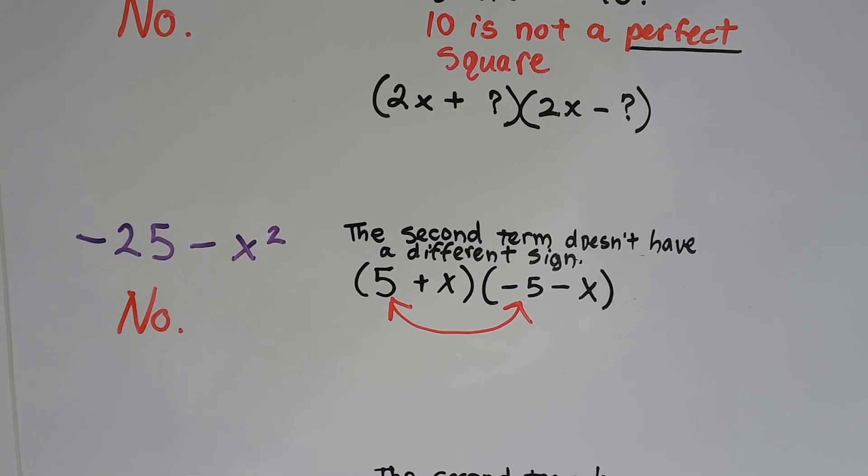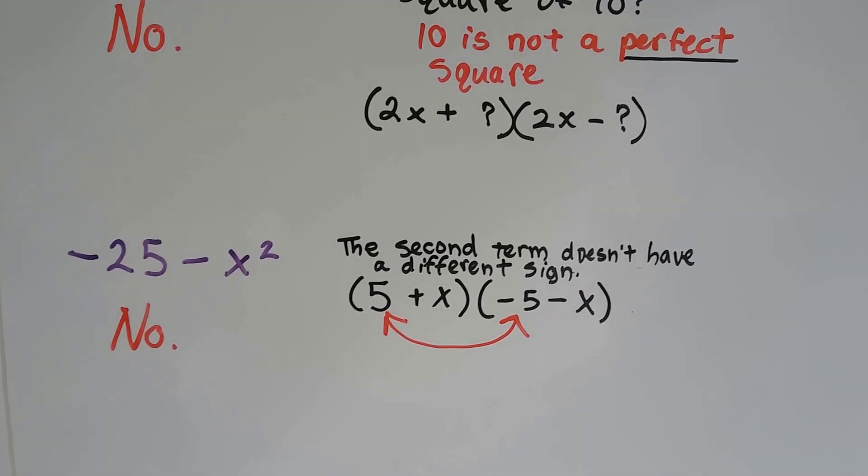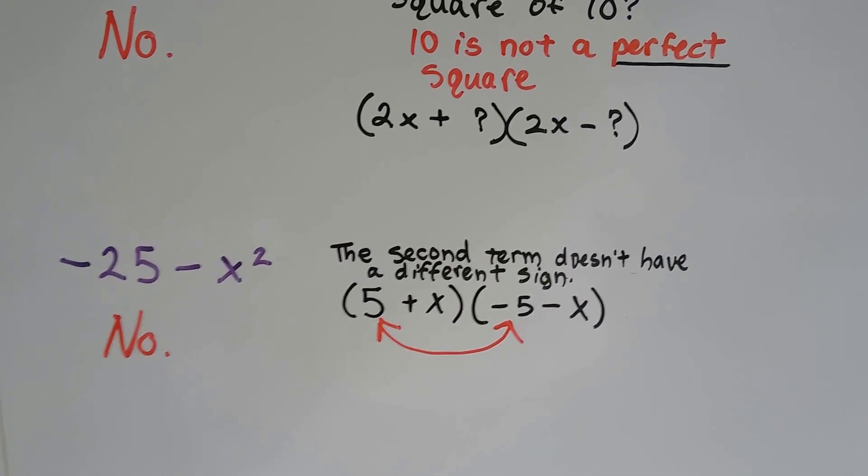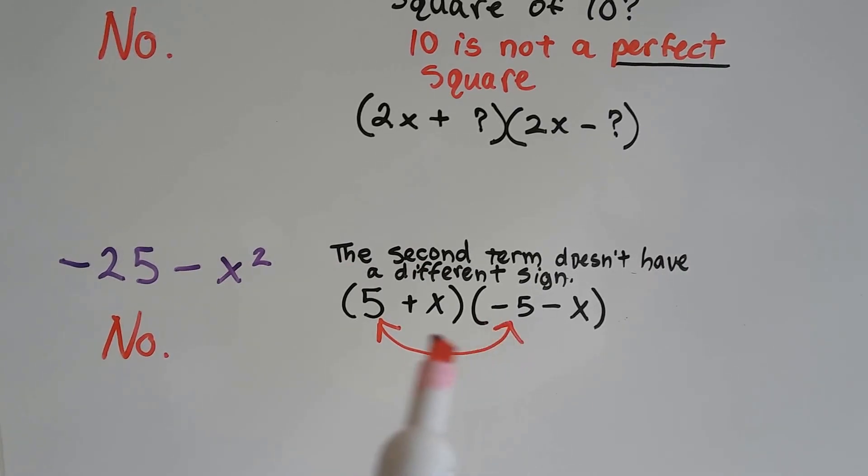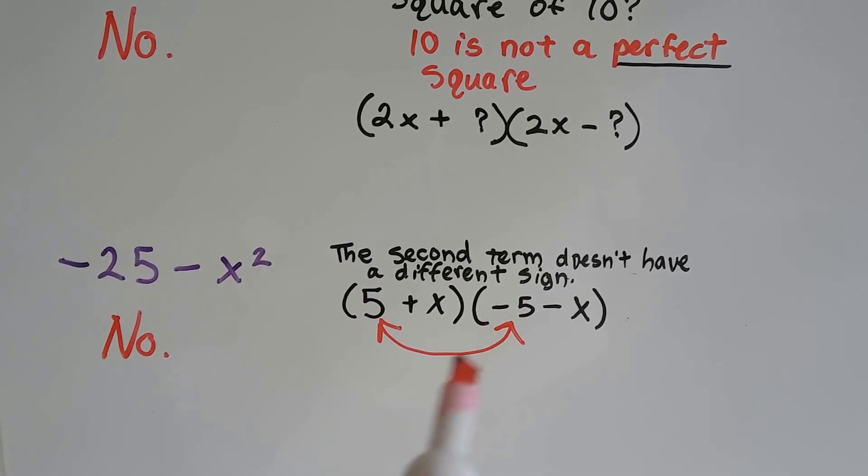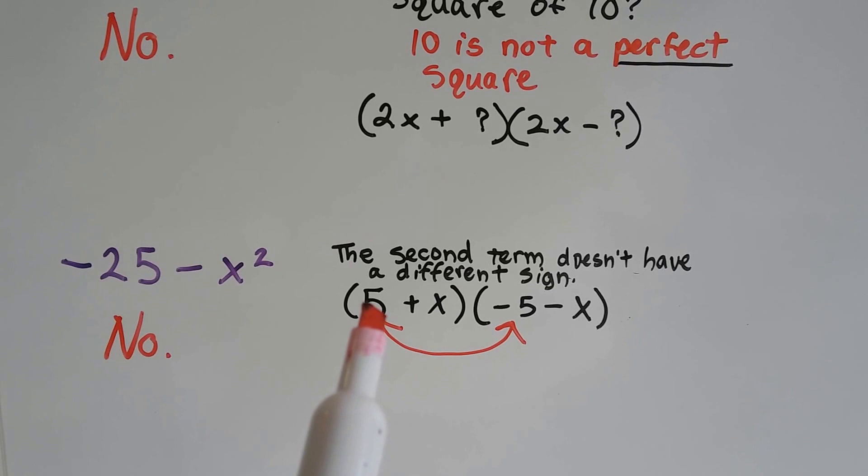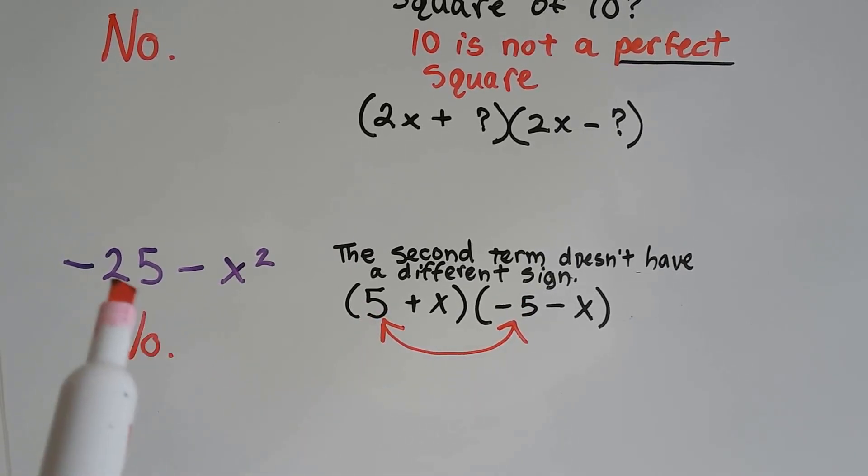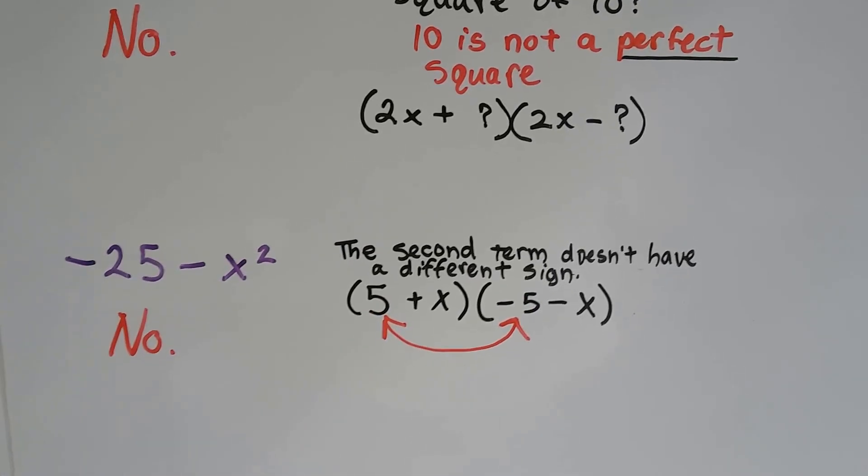How about this one? The second term doesn't have a different sign. So nope, it doesn't work because we can't have a positive and a positive when we're factoring. They have to be different. So that won't work. That's the only way we're going to get a negative 25.